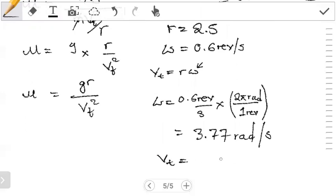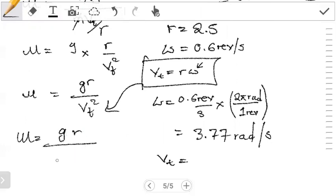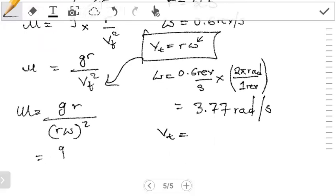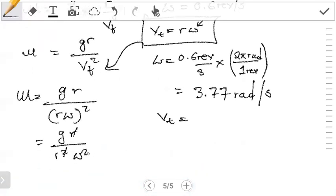Okay, so now we can substitute. Anyway, we can just get this equation and substitute it here so that we can simplify this a little bit. Mu is equal to g r over this becomes r omega squared, and then this becomes g r over r squared omega squared. The r's cancel out, we remain with mu is equal to g over r omega squared.